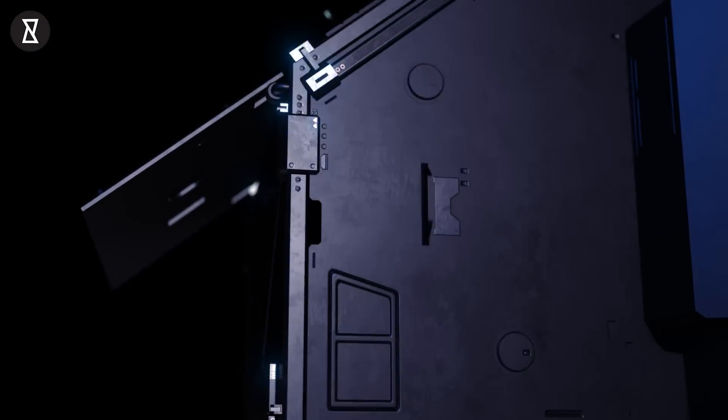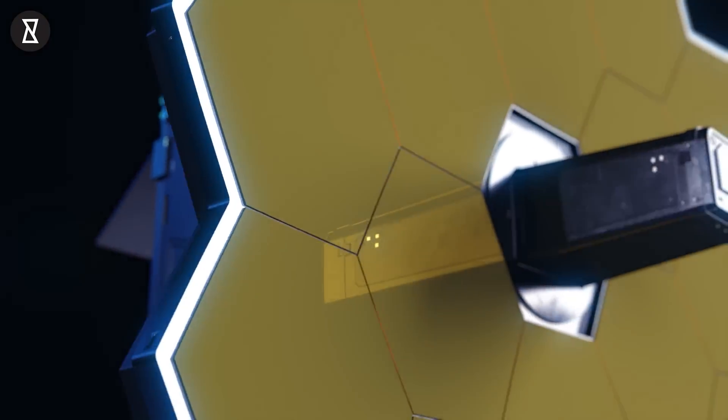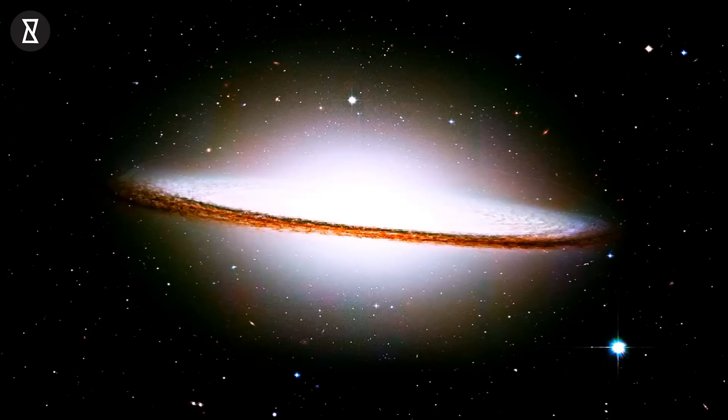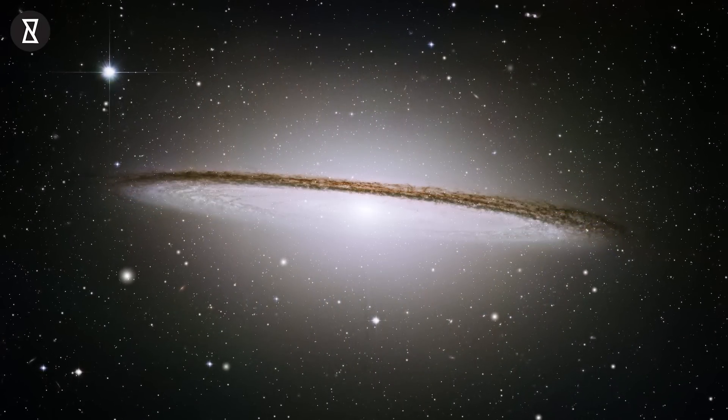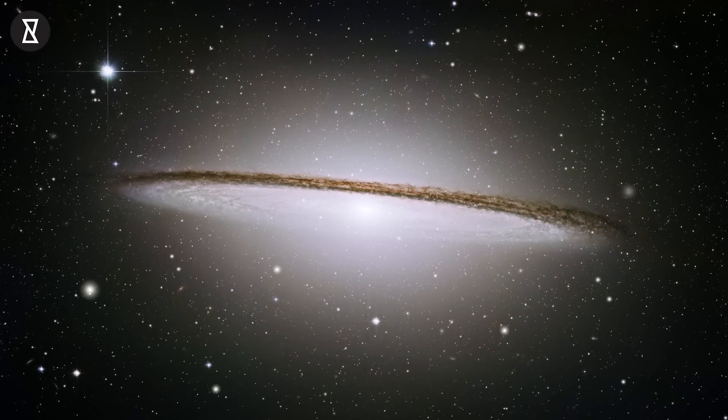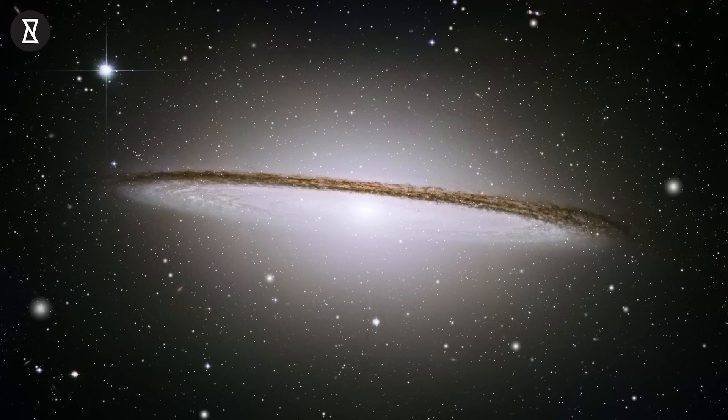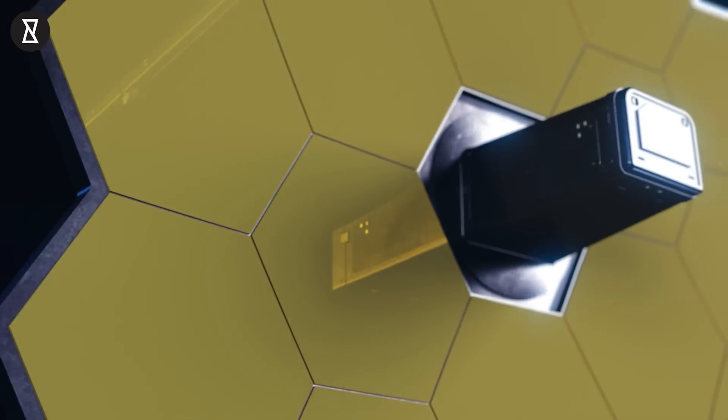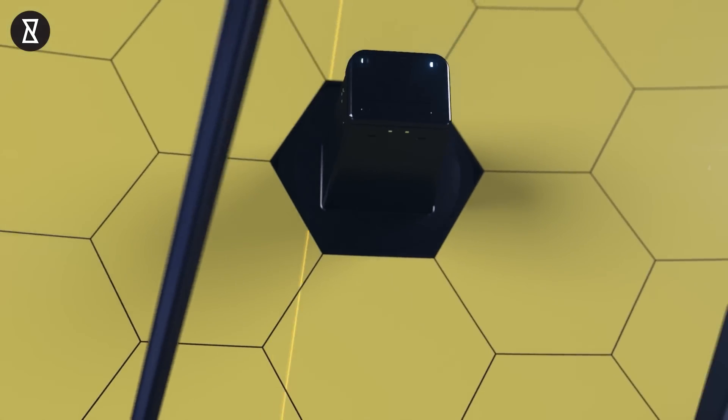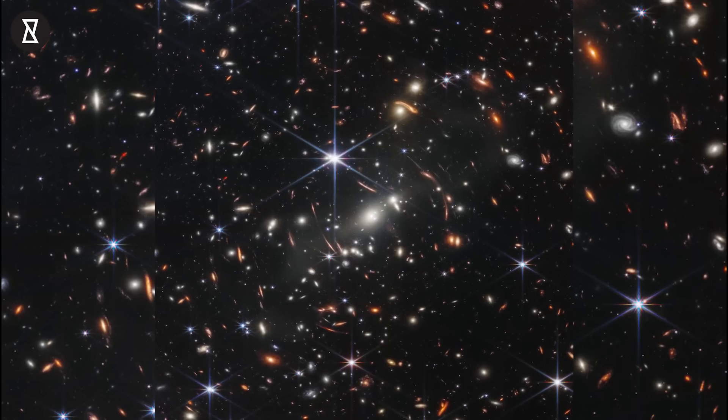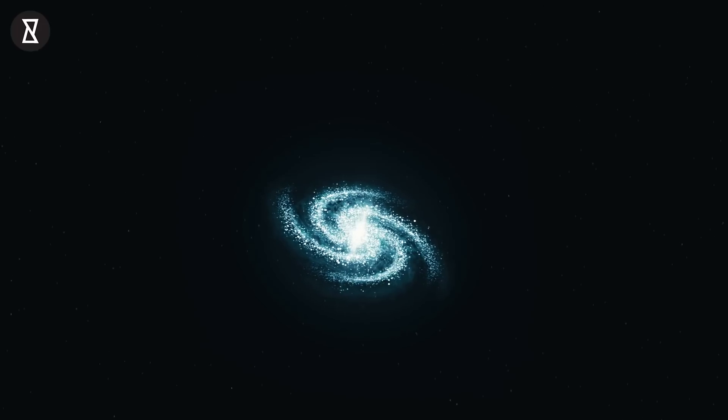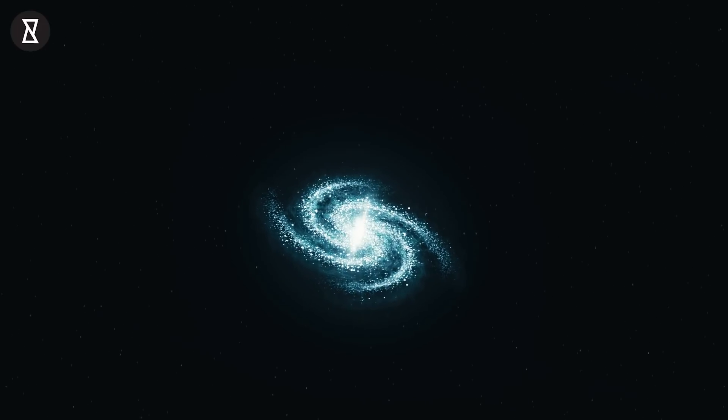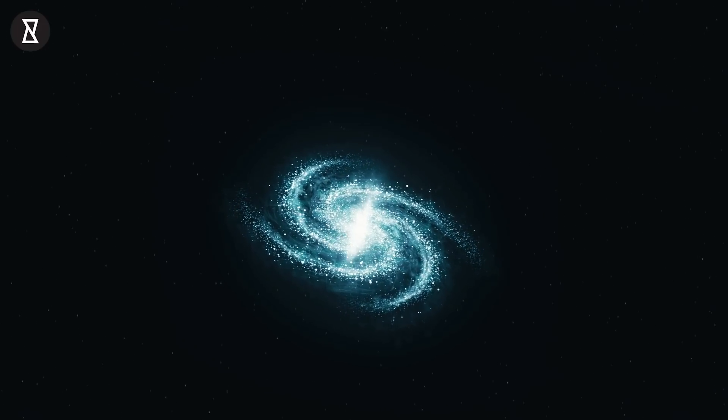Now, the James Webb Space Telescope has potentially broken records and spotted the oldest galaxy in the universe, a galaxy that existed when the universe was a mere 300 million years old—a cosmic baby. That's right, the super space telescope, which was responsible for the deepest and sharpest infrared image of the early universe ever taken only a month ago, has now broken its own record by capturing a picture of the oldest galaxy in the universe.